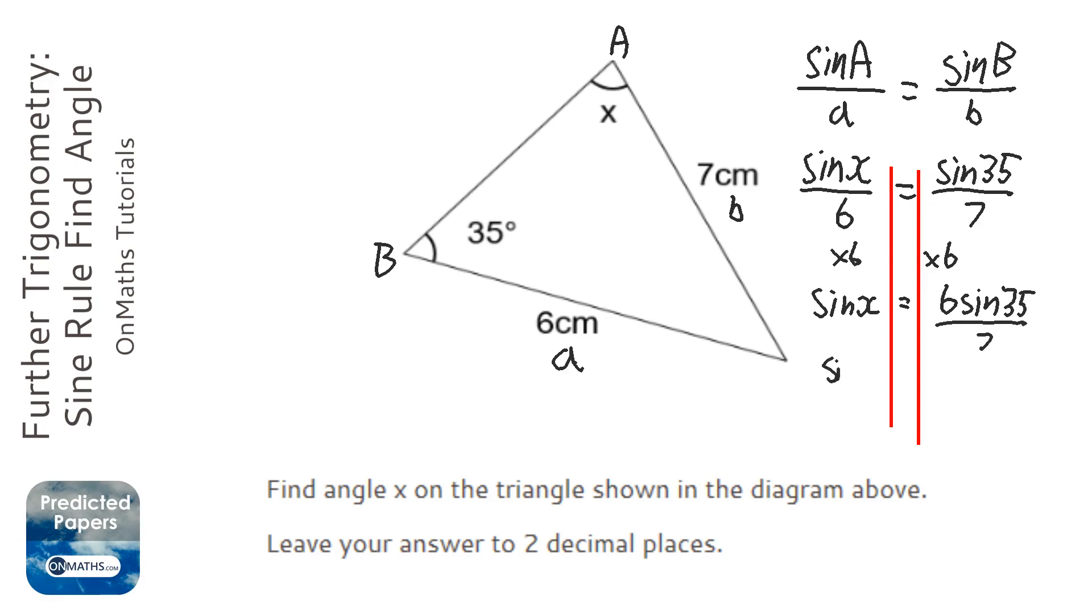And then we get inverse sin both sides. So x equals the inverse sin of 6 sin 35 over 7. And you could have worked out what that was before we hit that step.